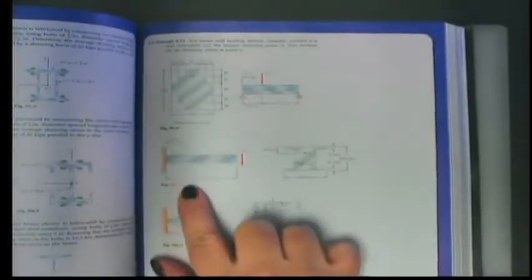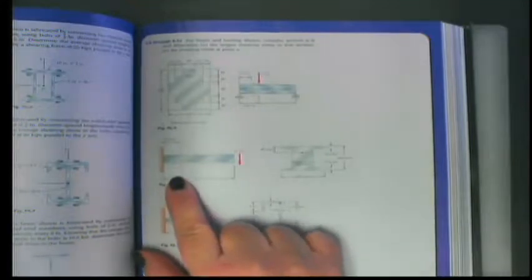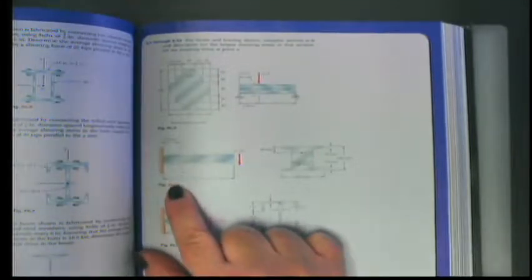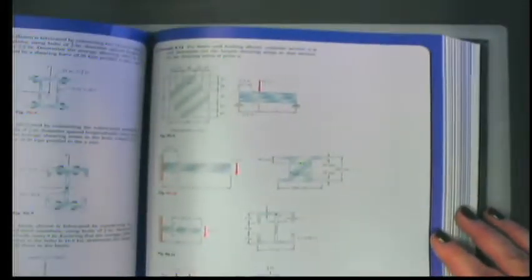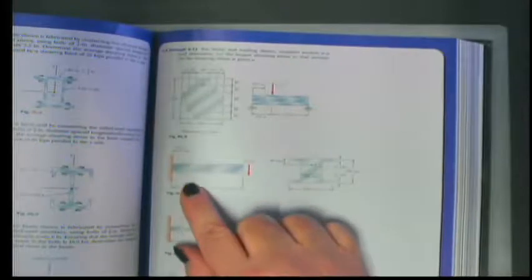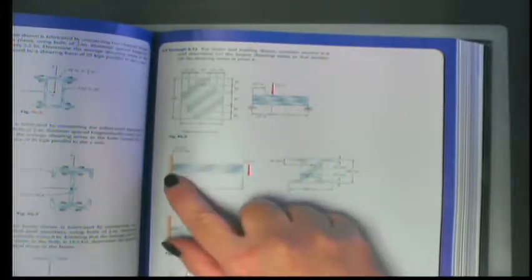Let's go over and take a look at Problem 610. The directions for 6.9 through 6.12 state: for the beam and loading shown, consider Section N-N' and determine the largest shearing stress in that section and the shearing stress at point A.